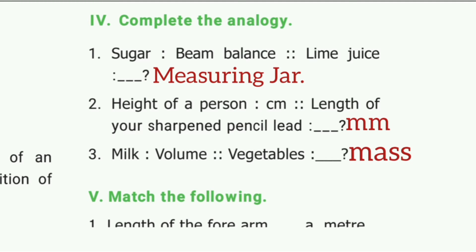Complete the analogy. First one: Sugar — beam balance; lime juice — measuring jar. Second one: Height of a person — centimeter; length of a sharpened pencil — millimeter.